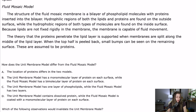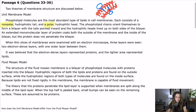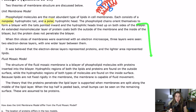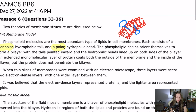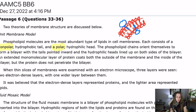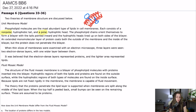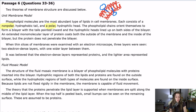Question 33: How does the unit membrane model differ from the fluid mosaic model? Think about the big difference described in the passage — it's the protein tails: the hydrophobic regions of proteins that are inserted into the bilayer in the fluid mosaic model, whereas the unit membrane model just has them sitting on either side. Answer A says the location of proteins differs in the two models — that's partly right. They both have proteins on the outside, but the fluid mosaic model specifically describes proteins penetrating the bilayer.